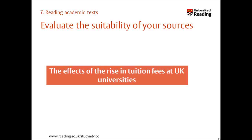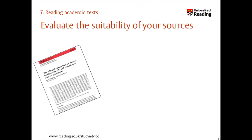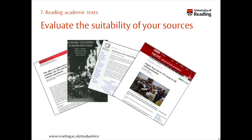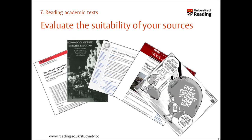Imagine you're researching the effects of rising tuition fees at UK universities. Which of these sources might you consider reading and why? A journal article, a book, a Wikipedia entry, a news story, and a satirical cartoon. Each and all of these sources may be suitable for different reasons depending on your purpose and what you're trying to find out. A Wikipedia article may give a useful introductory overview to help orientate yourself in a new topic. A news story or cartoon are topical but not necessarily academically rigorous, but they could be useful to show media opinions at the time.